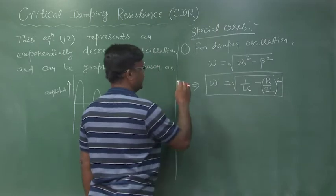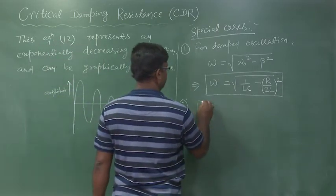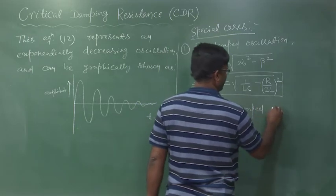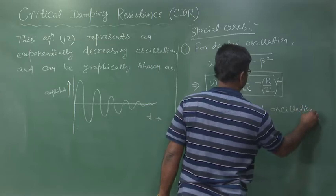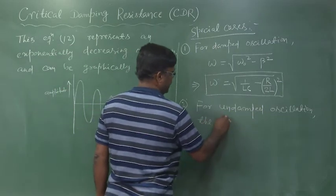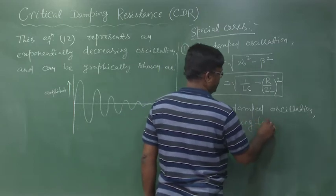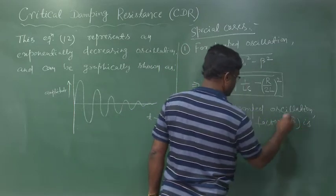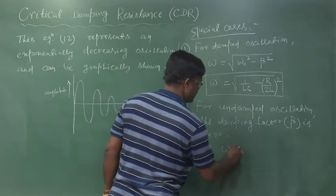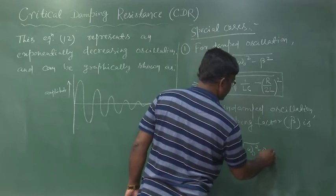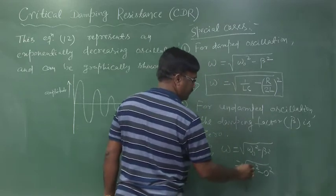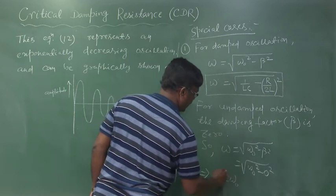For Case 2, undamped oscillation, the damping factor beta is zero. So omega becomes √(ω₀² − β²) = √(ω₀² − 0) which implies omega equals omega₀.